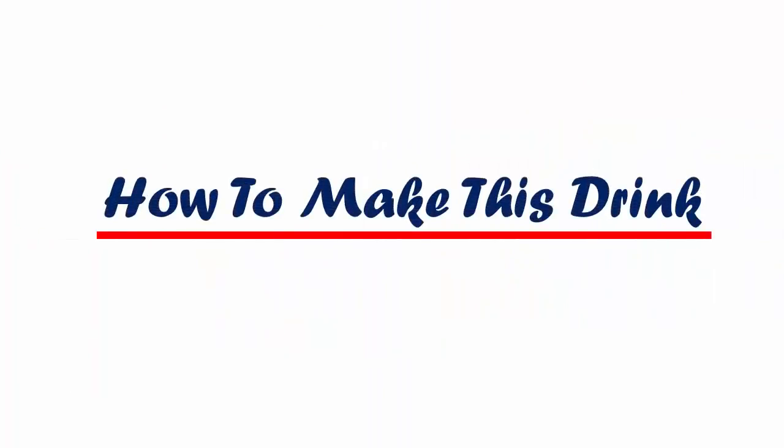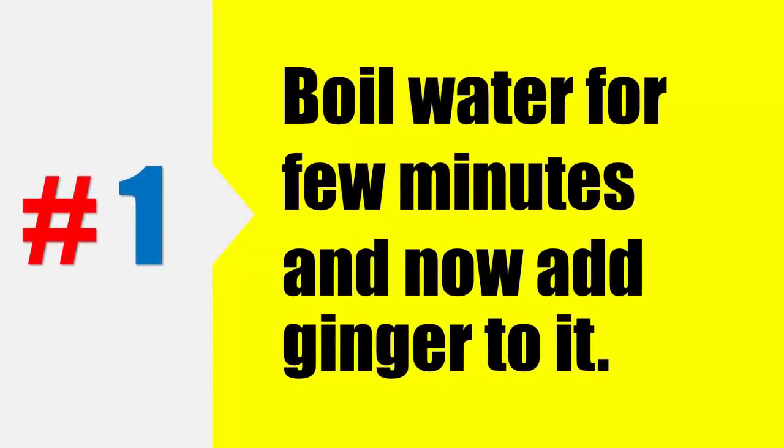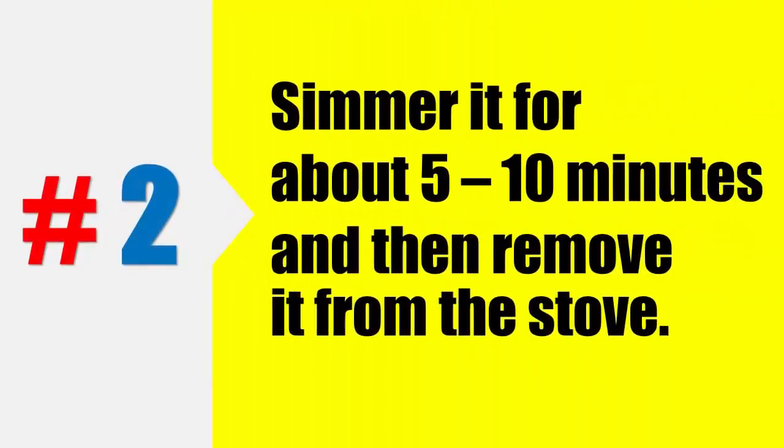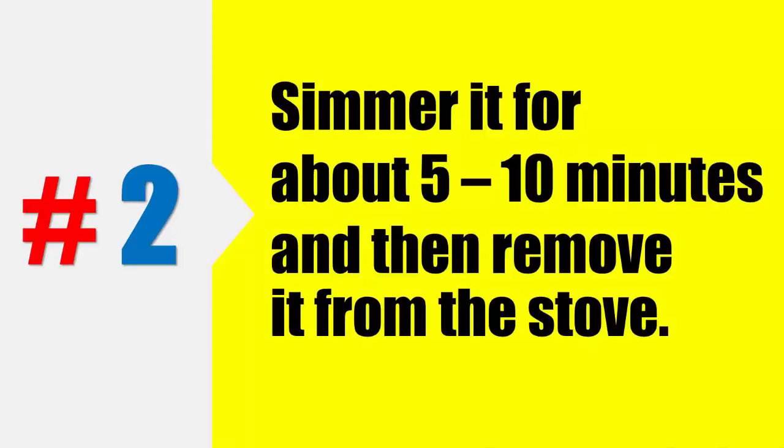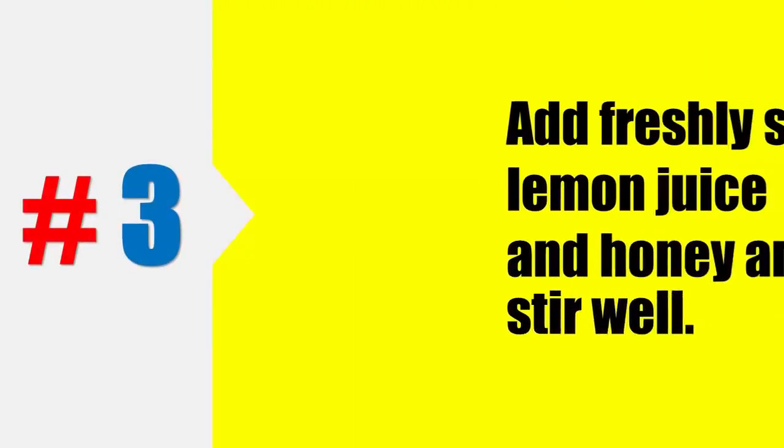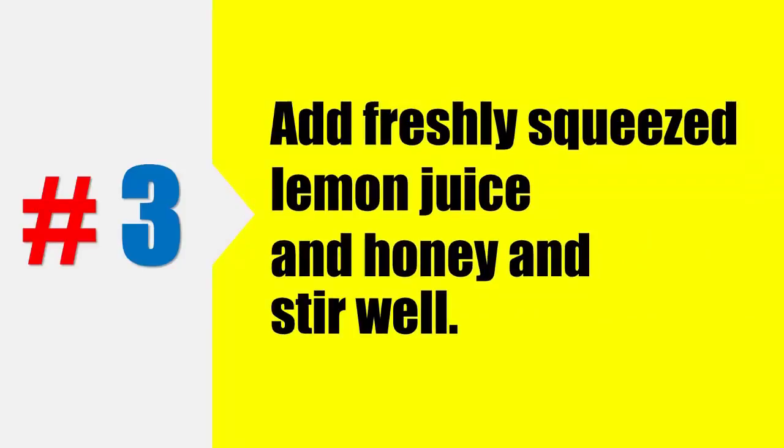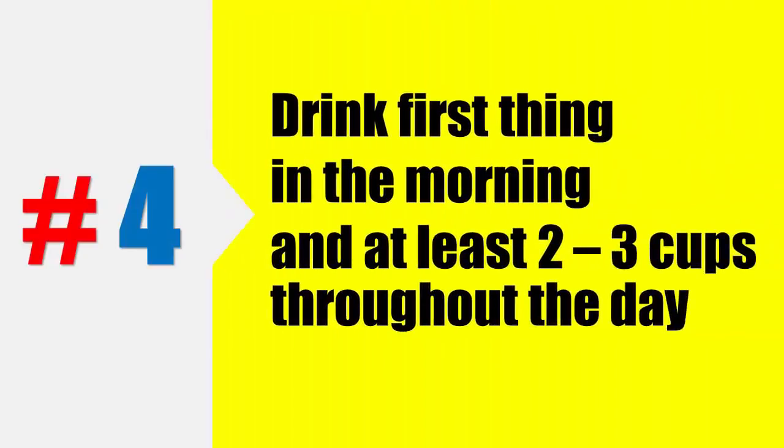How to make this drink: Step 1, boil water for a few minutes and now add ginger to it. Step 2, simmer it for about 5 to 10 minutes and then remove it from the stove. Step 3, add freshly squeezed lemon juice and honey and stir well. Step 4, drink first thing in the morning and at least 2 to 3 cups throughout the day.